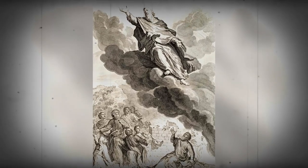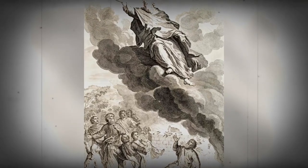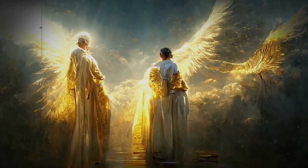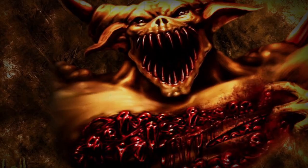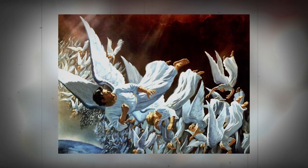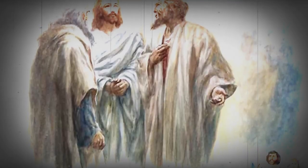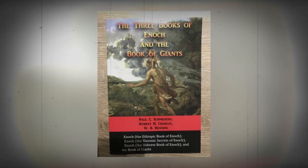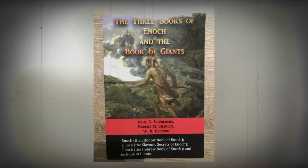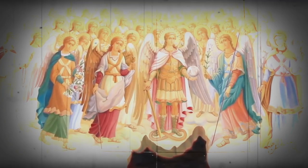The Book of Enoch is a Hebrew apocalyptic from the ancient period, a religious text attributed to Enoch, Noah's great-grandfather. The book contains unique information on the origins of Nephilim and demons, why the Genesis flood was morally necessary, why some angels fell from heaven, and a prophetic exposition of the Messiah's thousand-year reign. There are three books in total, although none of the three books is considered canonical scripture by most Jewish or Christian bodies.